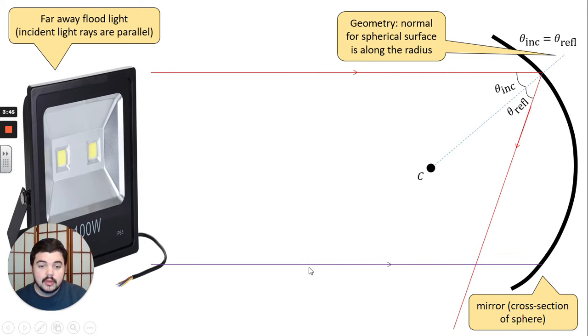Now let's look at this purple ray down here. It's coming in parallel too. And same idea, if we run a radial line through the center of the circle, that's going to give us our normal because it's a sphere. So it will reflect off in such a way that the angle of incidence is equal to the angle of reflection. When that happens, the purple ray meets the red ray there.